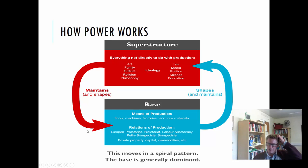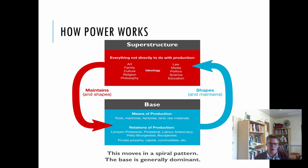Within Marx's work there's also the idea of base and superstructure — quite a difficult and abstract idea. He sees society as having two broad divisions. First, the base of society contains the means of production — the machines, factories, land, raw materials — and also the relations of production, meaning the links between people and the kinds of contracts they have. On top of the base is the superstructure, which is everything else in a society: the structure of the family, culture, religion and philosophy.